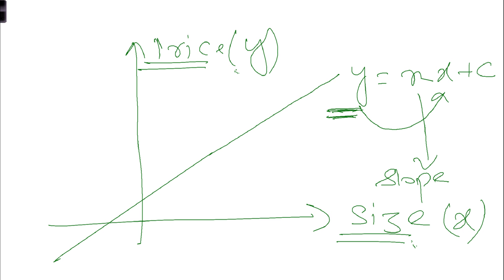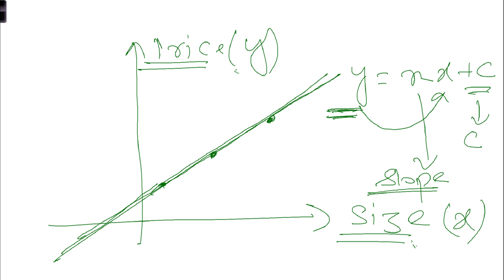m is the slope, and slope is different for all the points or observations in linear regression. However, c remains constant throughout the line — c stands for constant — because c is the point of intersection of the line with the y-axis, and there can be only one such point.